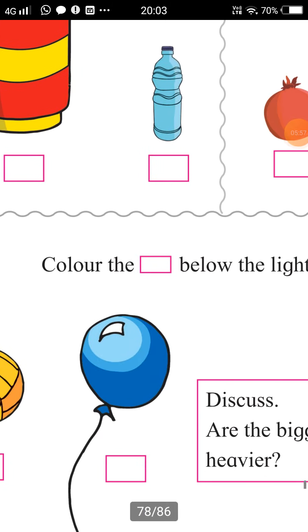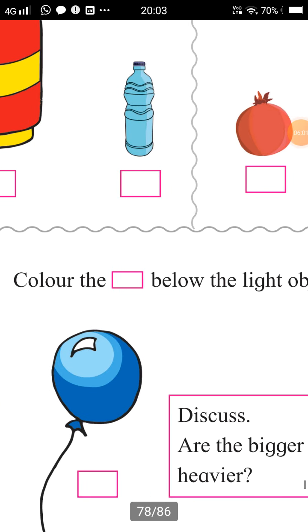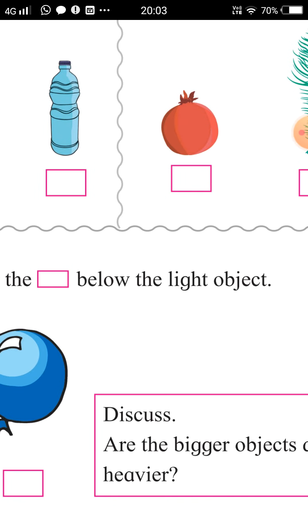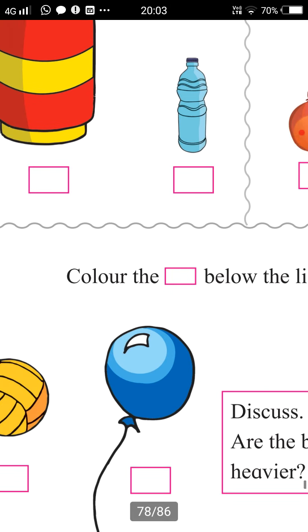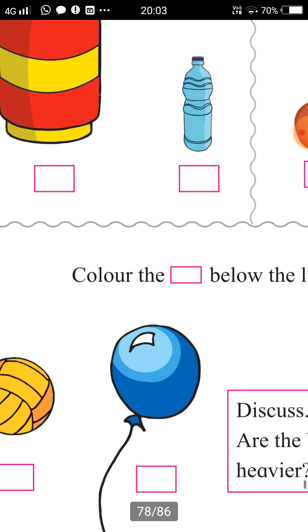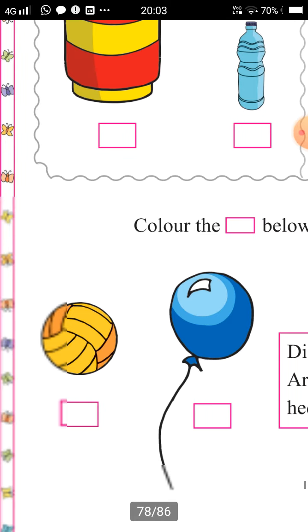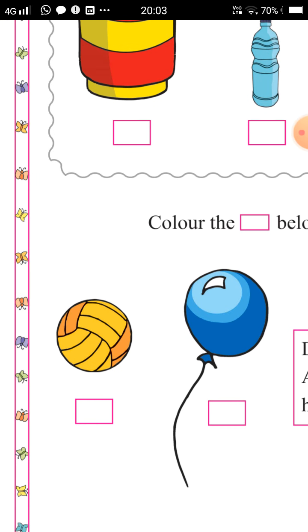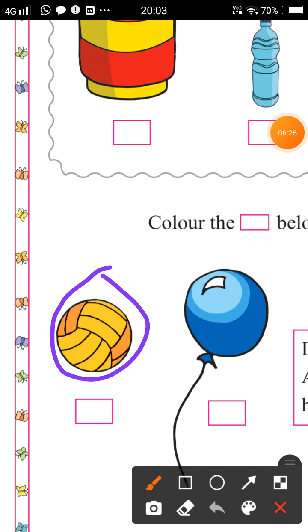Look at the next picture. The next instruction is: Color the box below the light object. Now what should we do? Which box should we color? The box below the light object, which is lighter in weight, that box we have to color. So here it is a ball and a balloon.